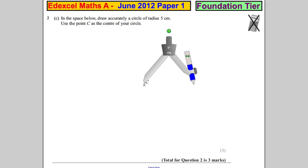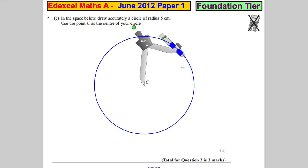And put the sharp piece of your pair of compasses there and draw yourself a circle. And that there is a circle with radius 5 and you're done.